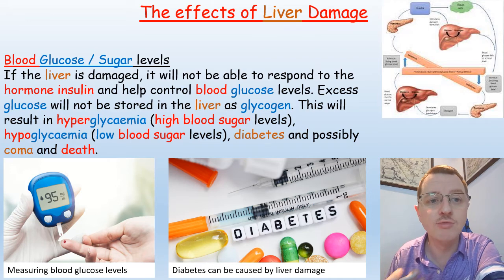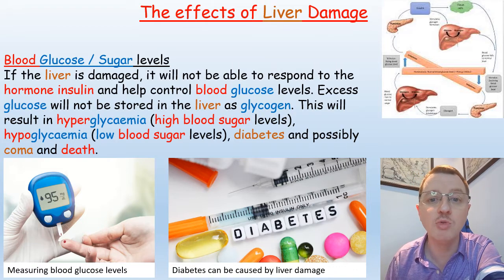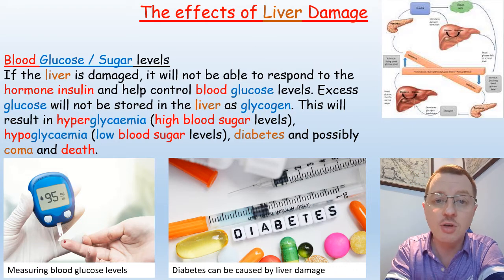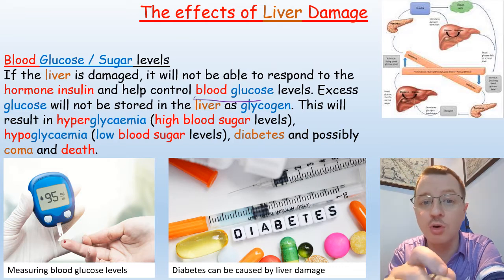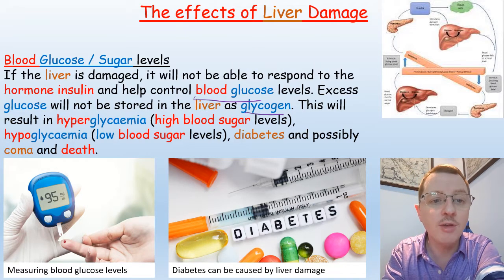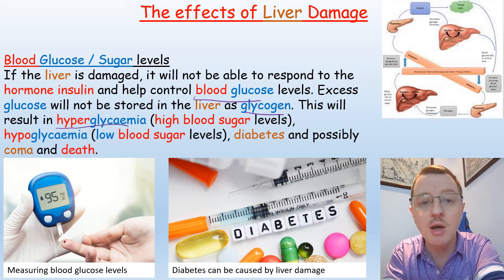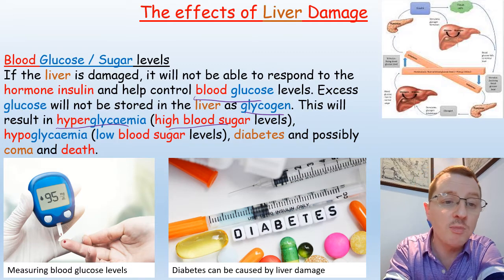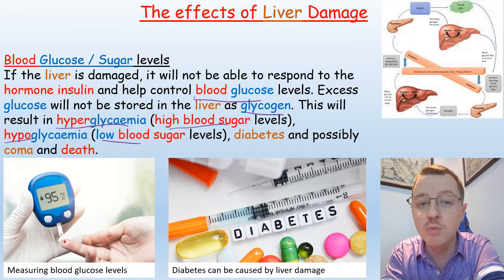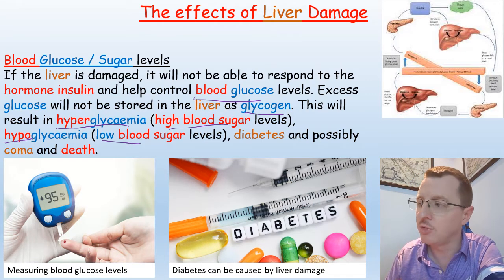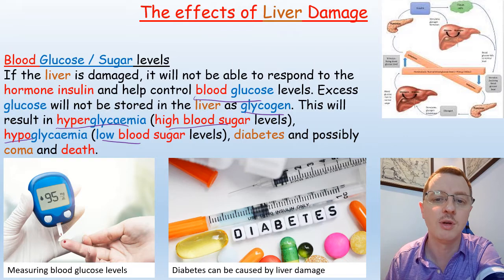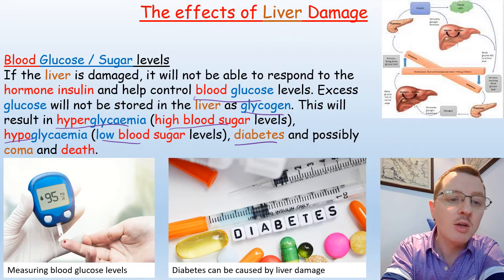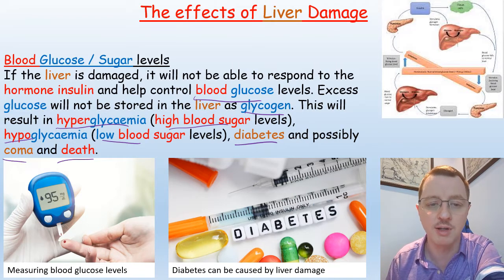The liver also has a role in regulating blood glucose and sugar levels. If the liver is damaged, it will not be able to respond to the hormone insulin to control blood glucose levels. Instead, excess glucose will not be stored in the liver as glycogen, resulting in hyperglycemia, or high blood sugar levels, swiftly followed by hypoglycemia — very low blood sugar levels — because the liver cannot contribute to the homeostasis mechanisms controlling blood sugar levels. This can lead to diabetes, comas and possibly even death if not rectified quickly.